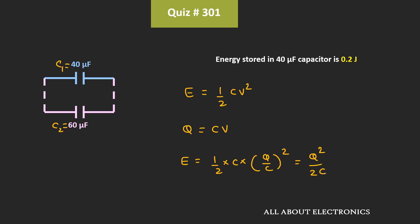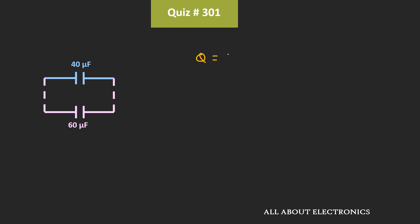Here we have been given that the energy stored in the first capacitor C1 is equal to 0.2 J. That means 0.2 = Q² divided by 2C1, where C1 is equal to 40uF. From this, we can say that Q² is equal to 0.2 times 2 times 40uF. Simplifying, Q is equal to 4mC.